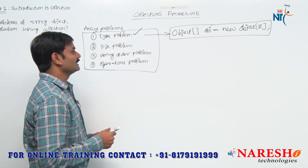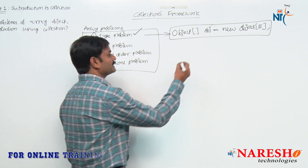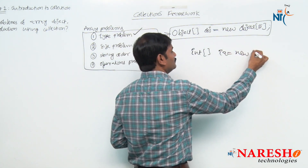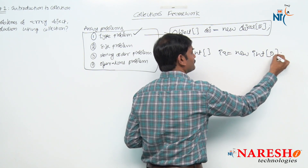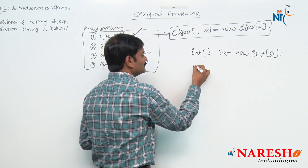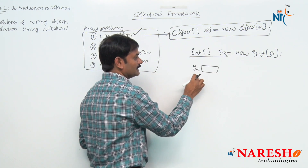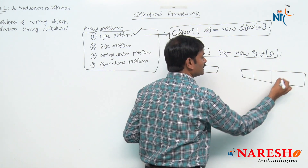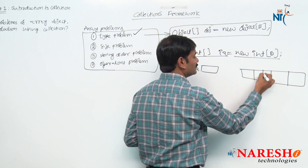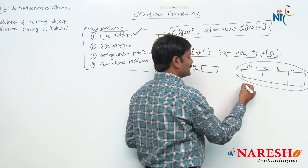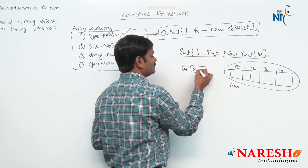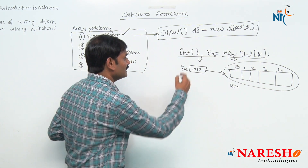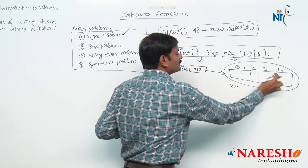Now let us understand what the size problem is. I have created an array: int[] ia = new int[5]. This line creates variable ia, and because of new int[5], it creates 5 locations — background variables 0, 1, 2, 3, 4. The array object is created with some base reference and ia stores that reference.